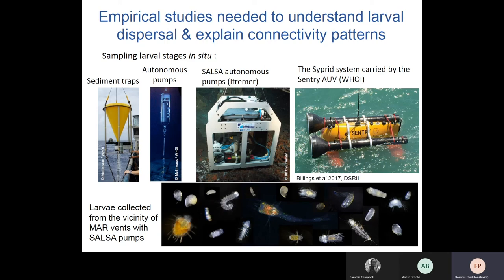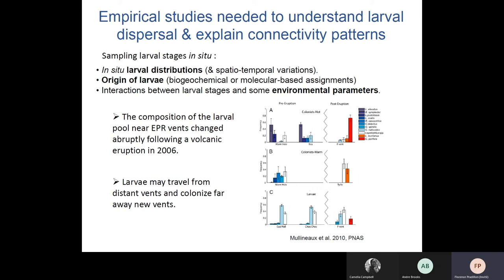Below are some examples of larvae collected with the SALSA pump developed at Ifremer. With this tool to sample larvae, we can collect information on the actual distribution of larvae in situ. Since larval stages are collected, they can also be used for assignment methods, and if environmental parameters are surveyed along with larval sampling — as can be done with the CYPRIS system — then information on interactions between larvae and their environment can be obtained.